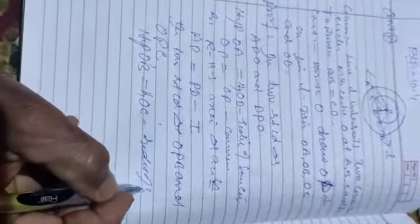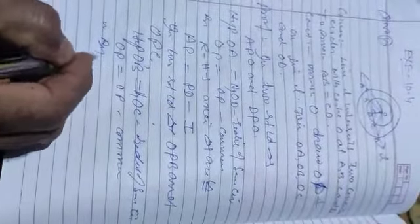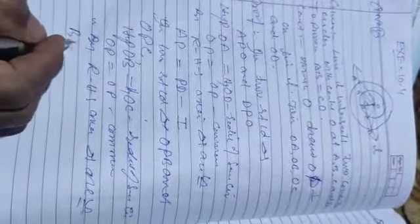They are radii of the same circle. Again, OP is equal to OP, it is common. Therefore, by RHS axiom, triangles are congruent. When triangles are congruent, we can say BP is equal to PC. This is equation number 2.